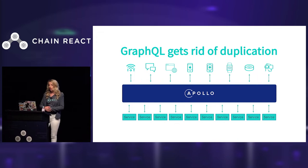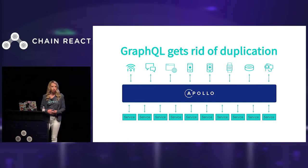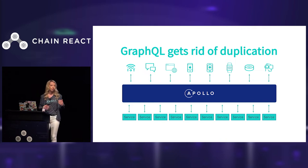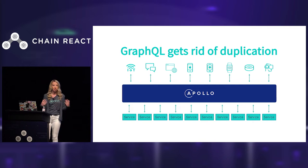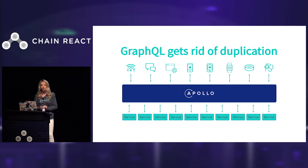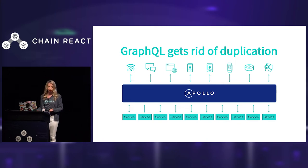Luckily, GraphQL can actually help us eliminate some of this duplicated logic. By layering a GraphQL server like Apollo Server over our existing microservices, we can now reuse all that sorting and filtering logic that used to live in our Redux action creators, and we can use this across all the platforms that we support. GraphQL gives us a schema so we know exactly what data all our microservices have, and our clients can request exactly what they need — saving round trips over the network as well as reducing payload sizes, which is extremely important if you're building a React Native app.